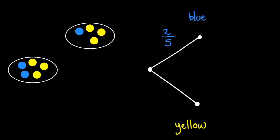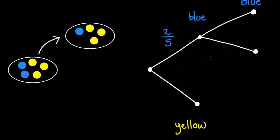Our sample space has changed. If a blue marble is drawn first, you are left with four marbles: one blue and three yellow. In other words, if a blue marble is selected first, the probability that you draw a blue second is one-fourth, and the probability that you draw a yellow second is three-fourths.